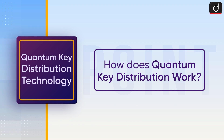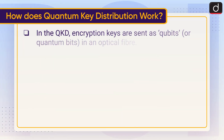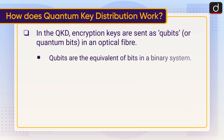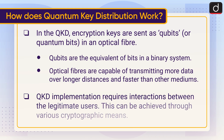In QKD, encryption keys are sent as qubits, or quantum bits, in an optical fiber. Qubits are the equivalent of bits in a binary system. Optical fibers are capable of transmitting more data over longer distances and faster than other mediums.